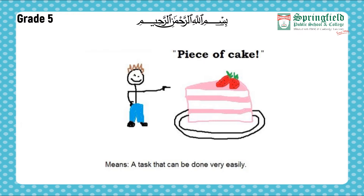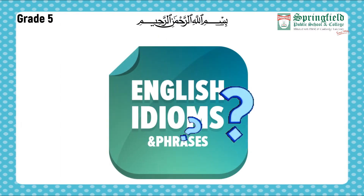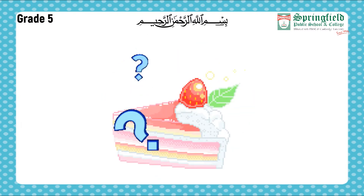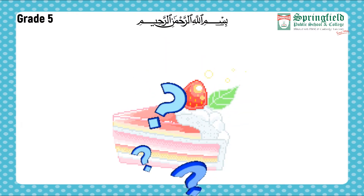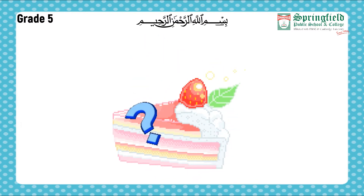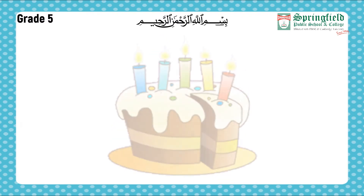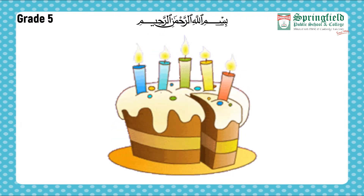So 'piece of cake' doesn't have its literal meaning. Now you may wonder why does 'piece of cake' mean easy? Well, most people — and maximum of the people would be correct as well — like cakes. We all love them. When there is a piece of cake in front of you, you eat it very easily without thinking twice, and that is why it means easy to do.